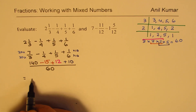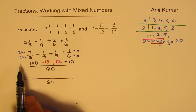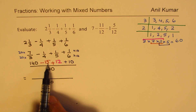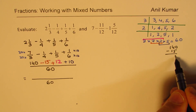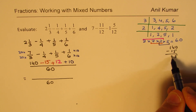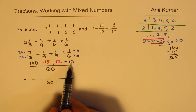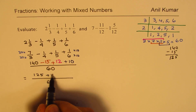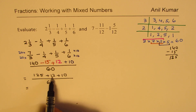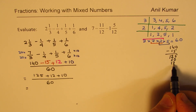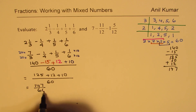Now it is a question of simple addition and subtraction. We write: 140/60 minus 15/60 plus 12/60 plus 10/60. Working left to right: 140 minus 15 — borrowing gives 125. Then 125 plus 12 plus 10: 125 plus 10 is 135, and 135 plus 12 is 147. So we get 147/60 as our answer.